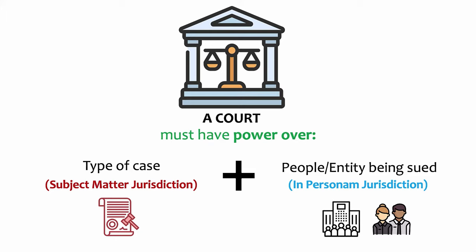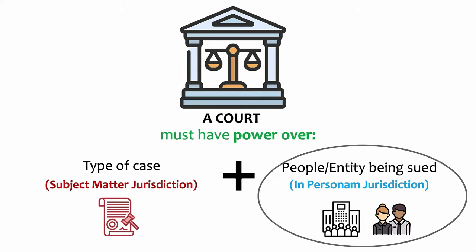There are two forms of jurisdiction and a court needs both in order to adjudicate a case. There will also need to be proper venue, but venue is not really jurisdiction and it's a separate video as well. The court needs power over the type of case, which is subject matter jurisdiction. The court also needs power to bind the parties — in the case of in personam jurisdiction — or to bind the property in the case of in rem or quasi-in rem. In this video, we're discussing in personam jurisdiction, the court's power over the person or entity being sued.